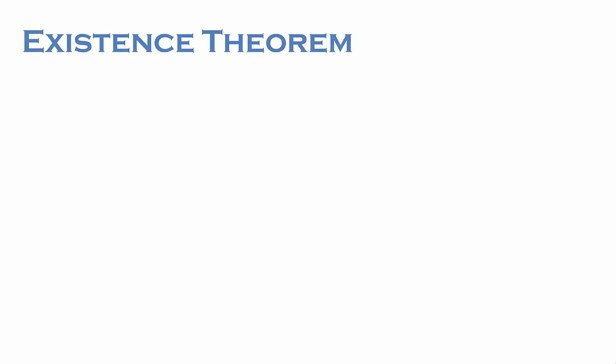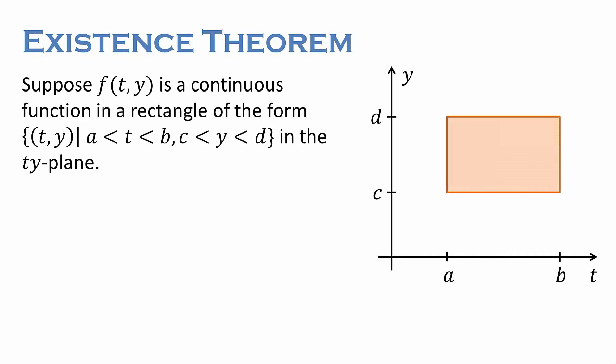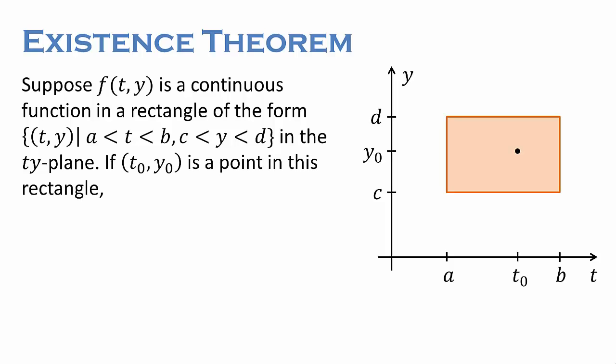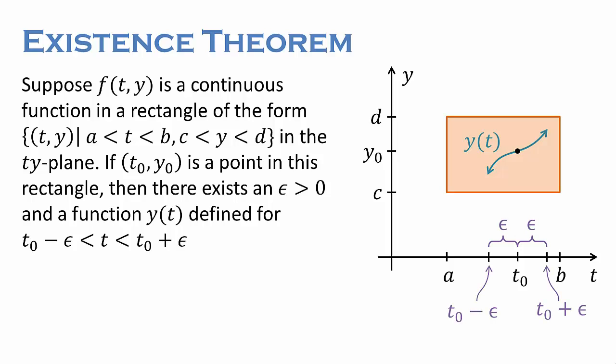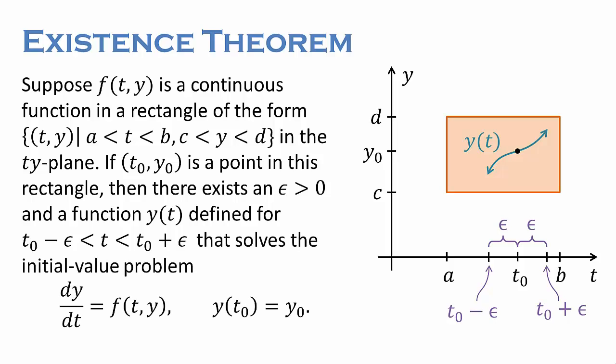First, let's talk about existence of the solution. Suppose f is a continuous function in a rectangle containing all points with t between a and b and y between c and d. If (t0, y0) is a point in this rectangle, then there exists a positive real number ε and a function y(t) defined for all t from t0 − ε to t0 + ε that solves the given initial value problem. In other words, as long as f(t, y) is continuous in a rectangle, even a tiny rectangle that contains the point (t0, y0) in its interior, then there exists a function y(t) that solves the differential equation passing through (t0, y0), and this function is defined in at least a tiny interval around this point.